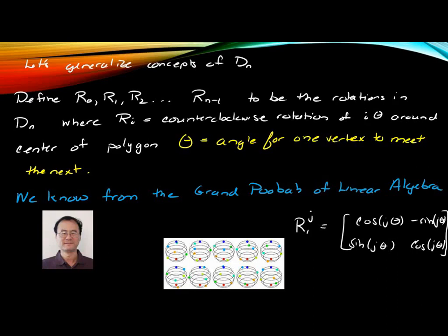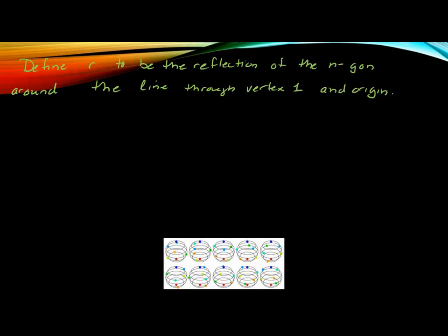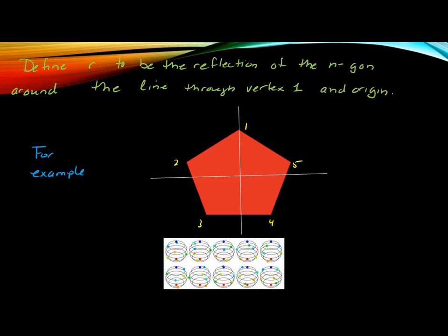So if I define R to be the reflection of the N-gon around the line through the vertex 1, so I can always position my N-gon like I did in that diagram where the 1 is at the top. And if I put a line through that vertex 1 in the origin, like I took a pentagon for you to see what that would look like. Then little r, the reflection, can be represented by this matrix. And you should know that from undergrad linear algebra. I think they probably talk about reflections and rotations.